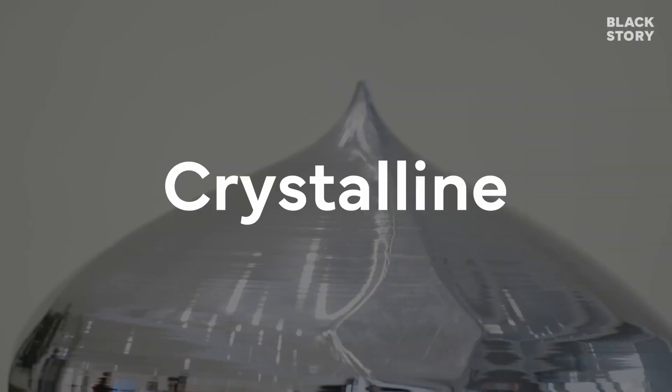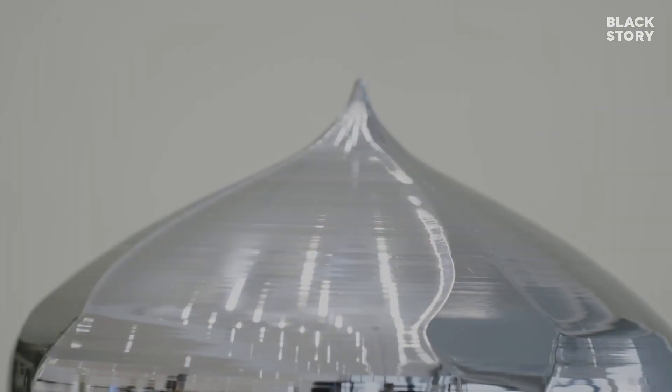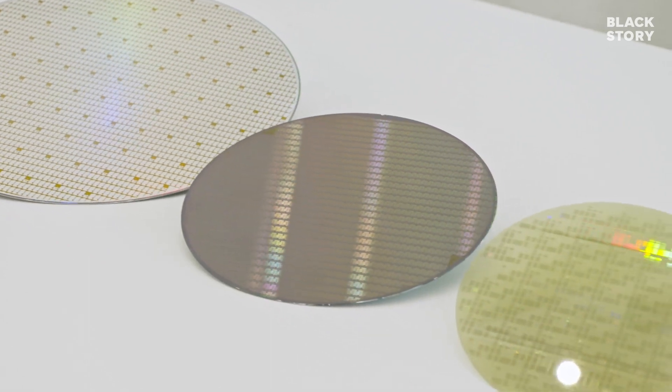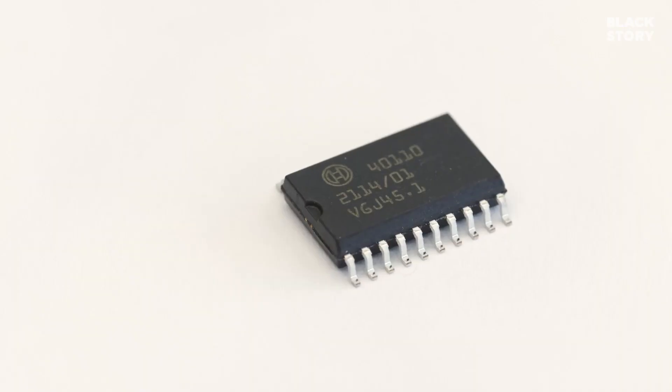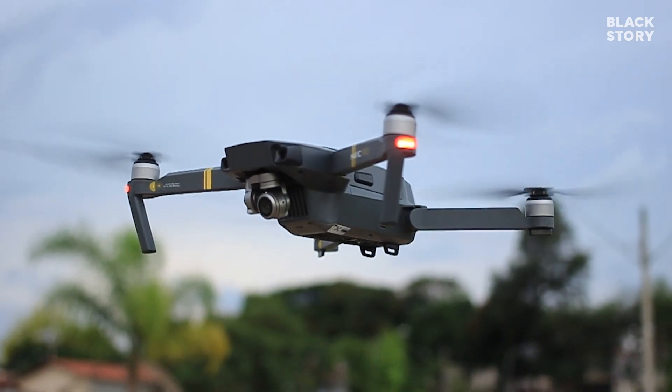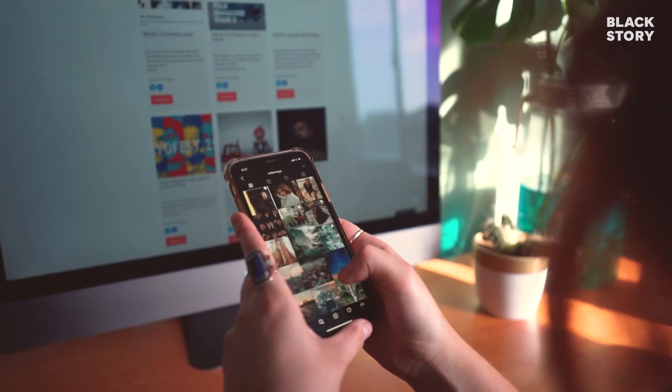Semiconductors are crystalline or amorphous solids that can conduct electricity under specific circumstances, making them a good medium to control electrical current in various applications. But how did these small electronic components made from sand come to dominate the entire field of science and technology since the mid 20th century?